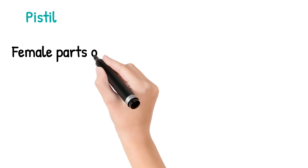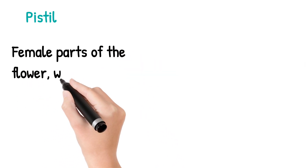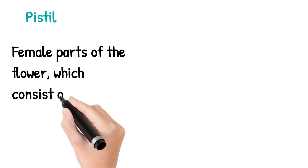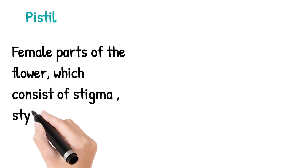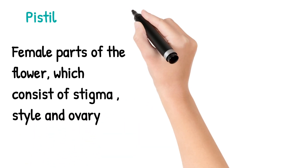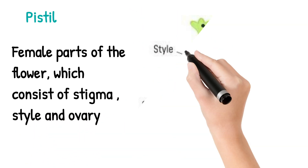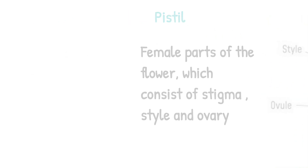Next we move on to the pistil. The pistil is the female part of the flower, which consists of the stigma, style, and ovary. You can see the picture — the pistil includes the stigma, style, ovary, and also the ovule.